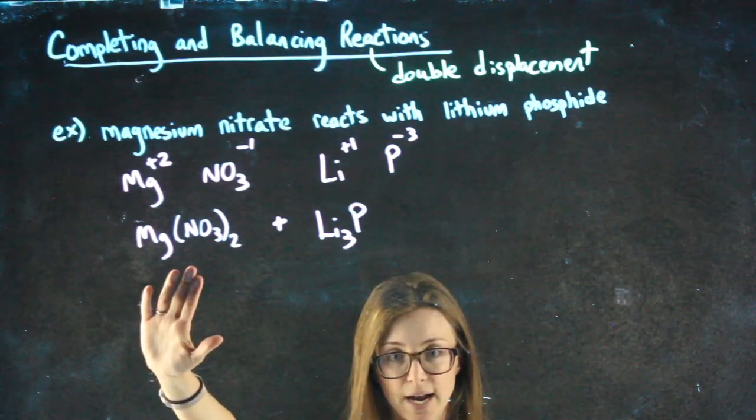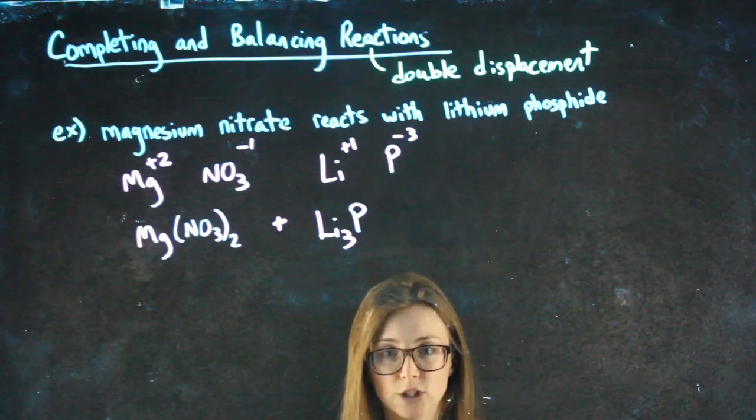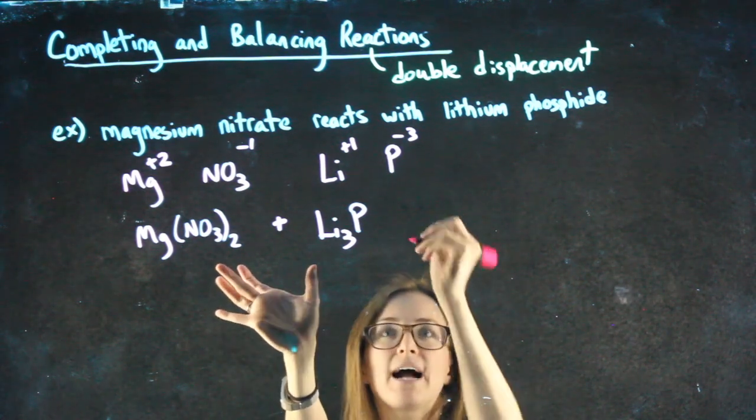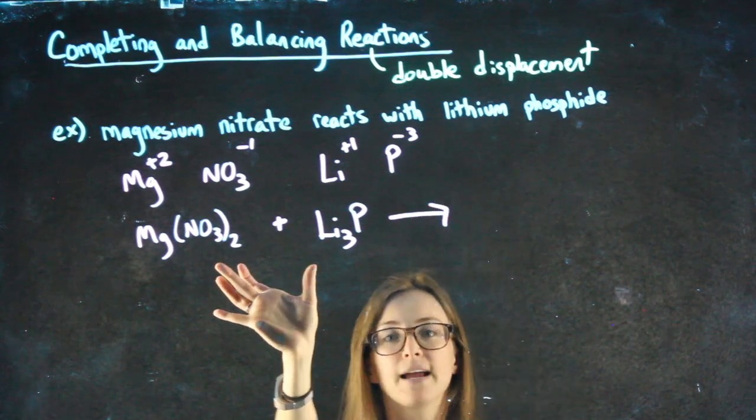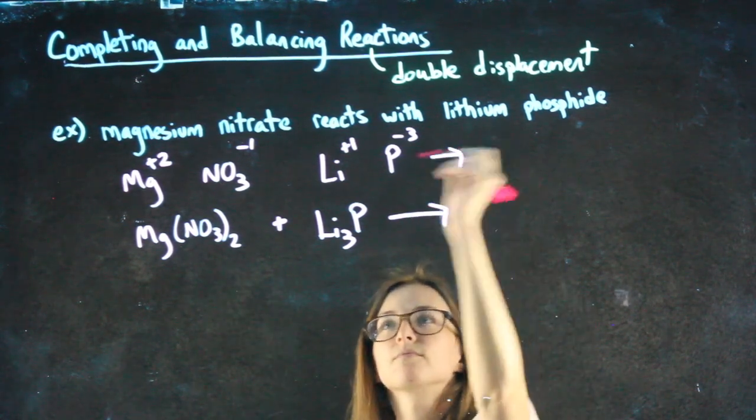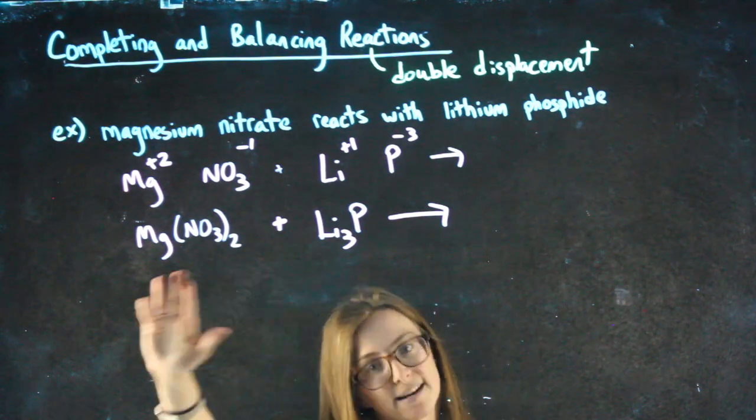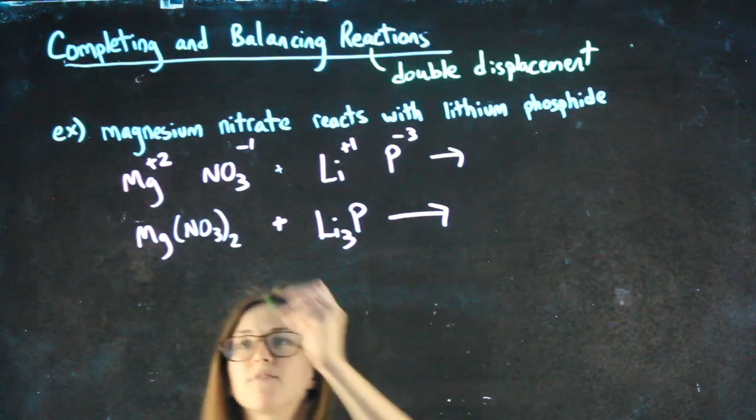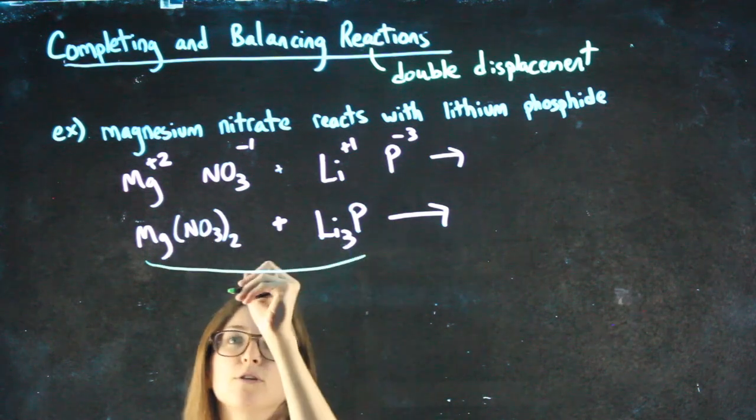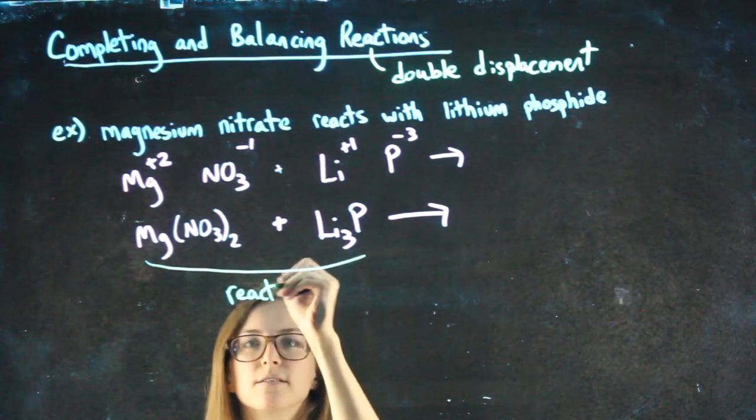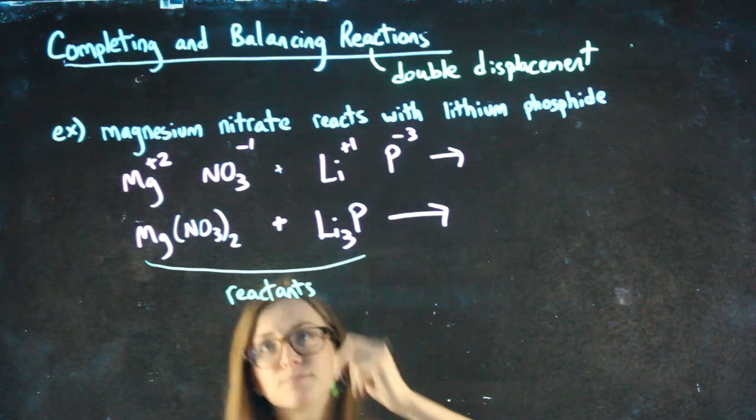That's the left-hand side of my reaction. If you've seen a chemical reaction before, you know they have an arrow in the middle. So anything that's reacting is on the left-hand side of my arrow. Those are called my reactants. So whatever ends up being on the left-hand side, those are my reactants. I just want you to get used to the names of things.